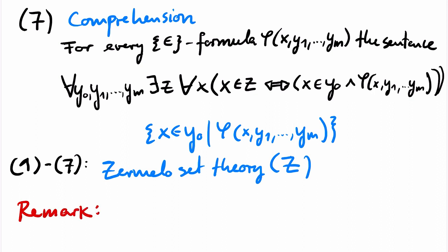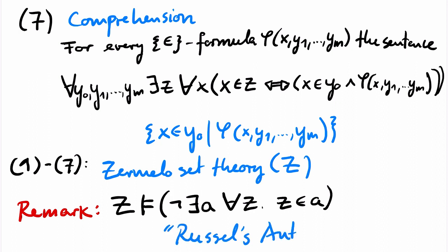Let's have a look at an example. I claim that Z implies the following sentence: There does not exist an A such that all z are in A. In other words, there is no set containing all sets. This might be counterintuitive to some of you and this is why it is called an antinomy, namely Russell's antinomy.